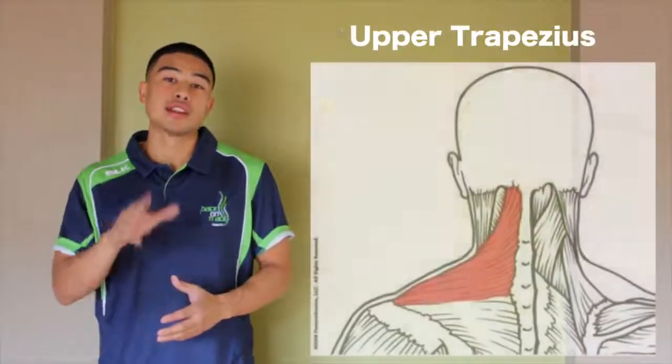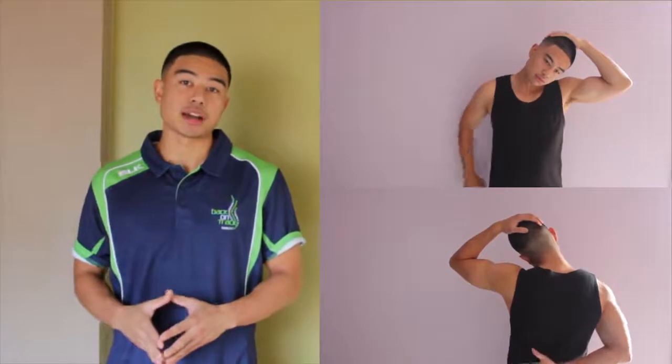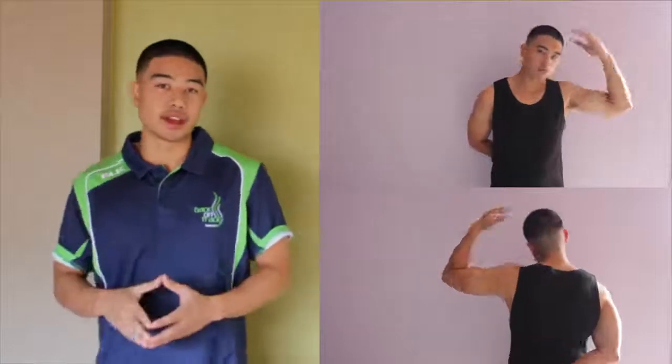The first muscle we're going to stretch is what they call the upper traps. This muscle runs on the top of your shoulder. To stretch the right upper traps, you're going to lead with your left ear down towards your left shoulder, grabbing with your left hand to put a bit more pressure on the stretch. To increase the stretch, grab your right hand and place it behind your back. Hold the stretch for about 15 to 30 seconds, repeat if necessary, then switch to the opposite side.